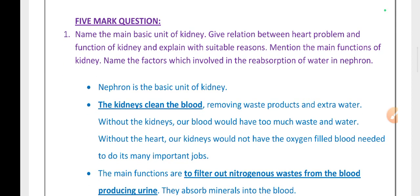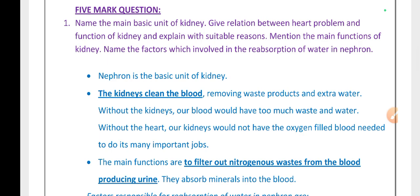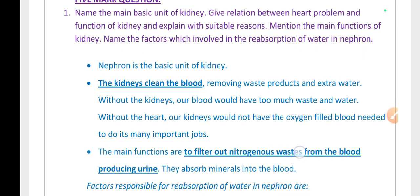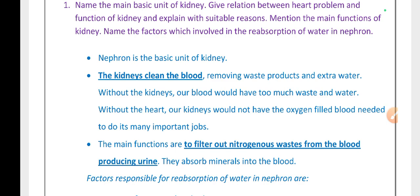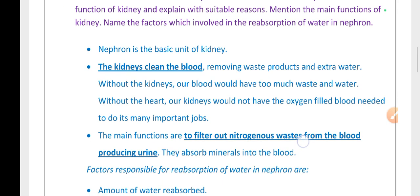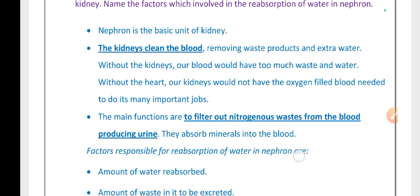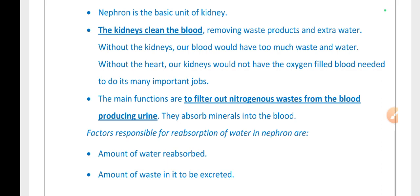Five-mark question: Name the main basic unit of a kidney. Give the relation between heart problems and function of kidney and explain with suitable reasons. Mention the main functions of a kidney. Name the factors involved in the reabsorption of water in nephron. Nephron is the basic unit of a kidney; it is the functional unit of kidney.